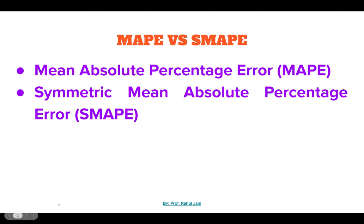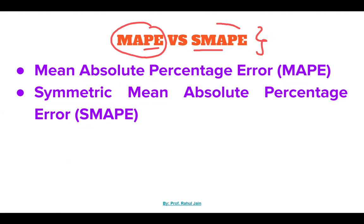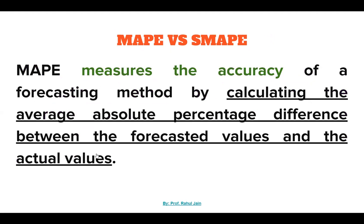Hello everyone. I hope you all are doing very well. In this session we are going to discuss the key differences between MAPE versus SMAPE. Both of these are examples of regression metrics commonly used in evaluating a model's performance. MAPE stands for Mean Absolute Percentage Error and SMAPE stands for Symmetric Mean Absolute Percentage Error. We will also discuss one important numerical problem and interpret how to compare the results of both metrics. We start from the basic definition.